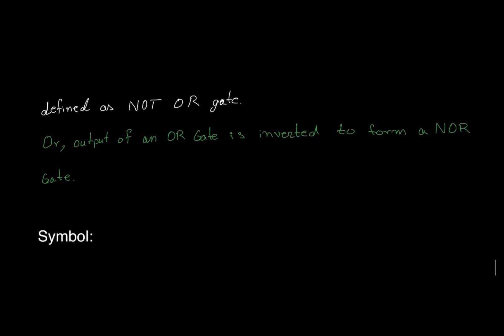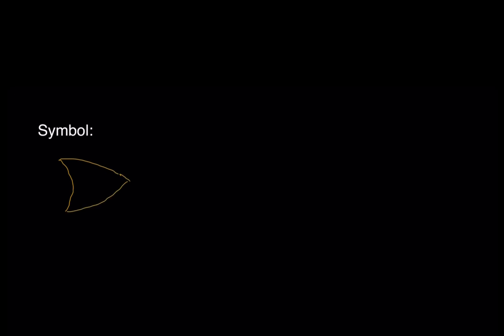Moving on to the symbol — we know that a symbol for the OR gate has two inputs. We'll only draw a two-input OR gate, so the expression is A plus B, or A OR B, to give an output I'll call C. Now the NOR gate uses the same symbol as the OR gate, but at the end it has a bubble.